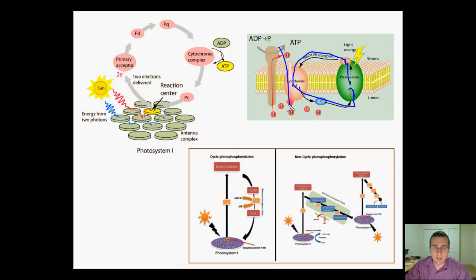Meanwhile, hydrogens are pumped into the lumen. All those electrons go back into photosystem 1, which means this time the electrons don't end up in NADPH.